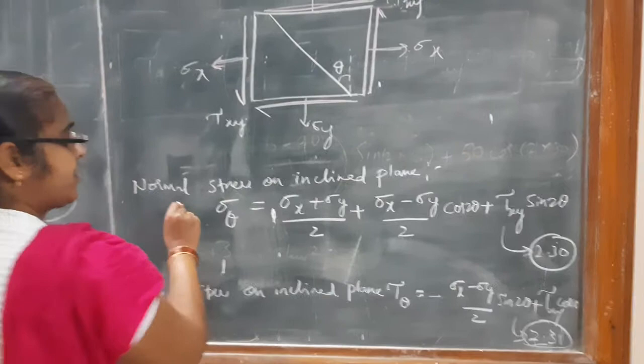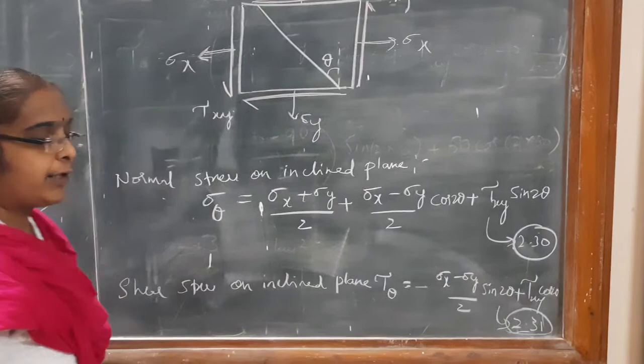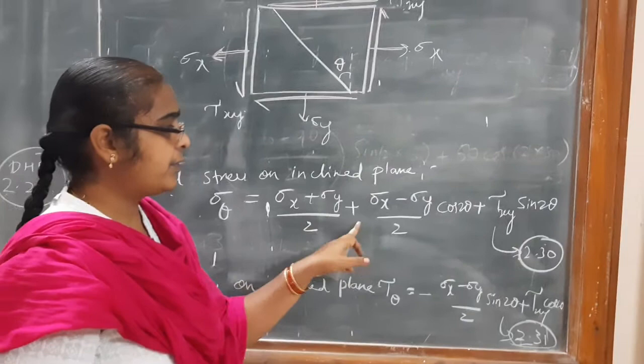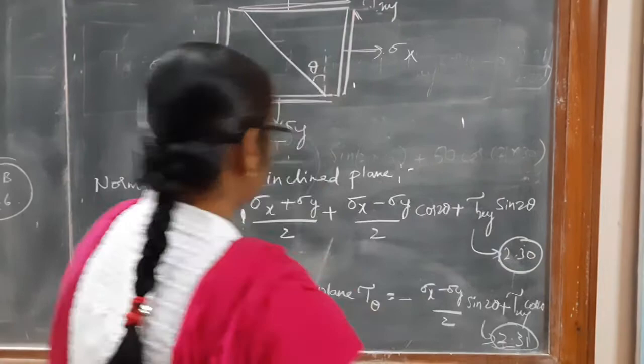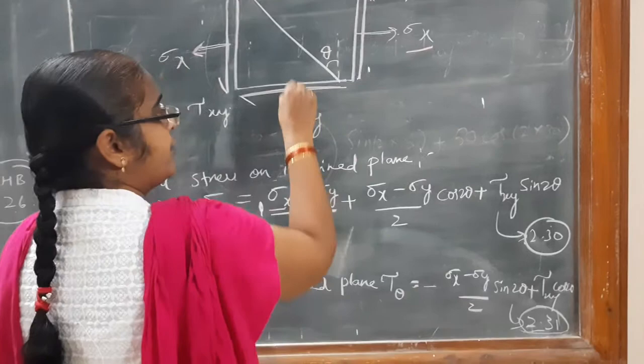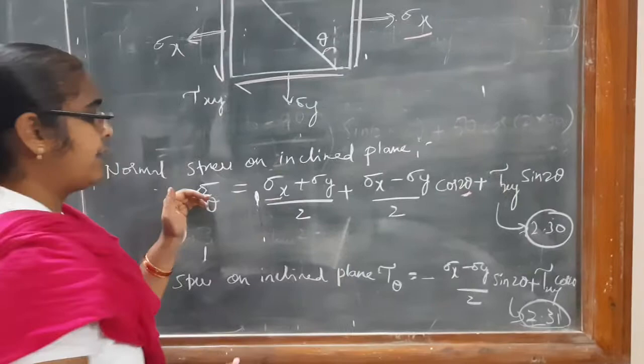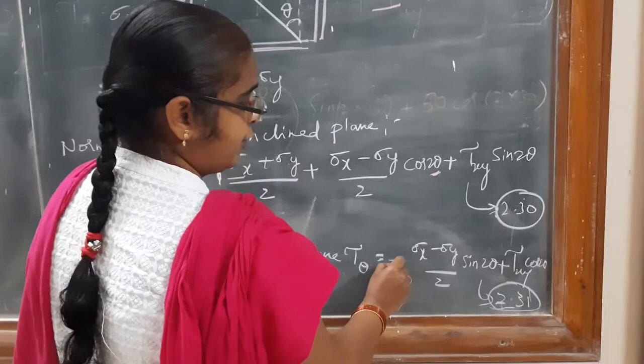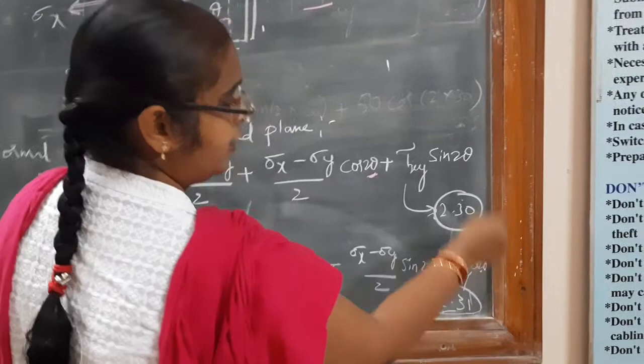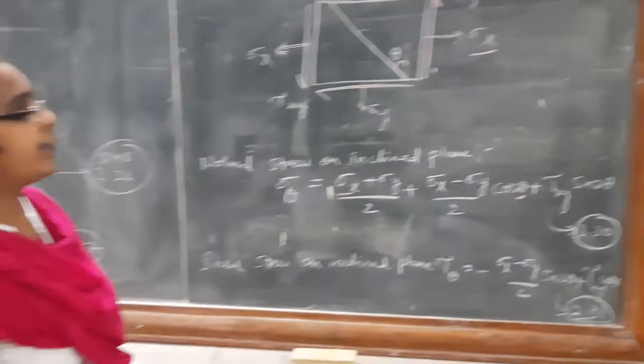The equations are readily available in your data handbook as equations 2.30 and 2.31. Normal stress sigma theta equals sigma x plus sigma y by 2, plus sigma x minus sigma y by 2 into cos 2 theta, plus tau xy into sine 2 theta. You will be given the values of sigma x, sigma y, and theta — just substitute and find sigma theta. Similarly, shear stress tau theta equals minus sigma x minus sigma y by 2 into sine 2 theta, plus tau xy into cos 2 theta. Substitute all values to find the shear stress on this member.